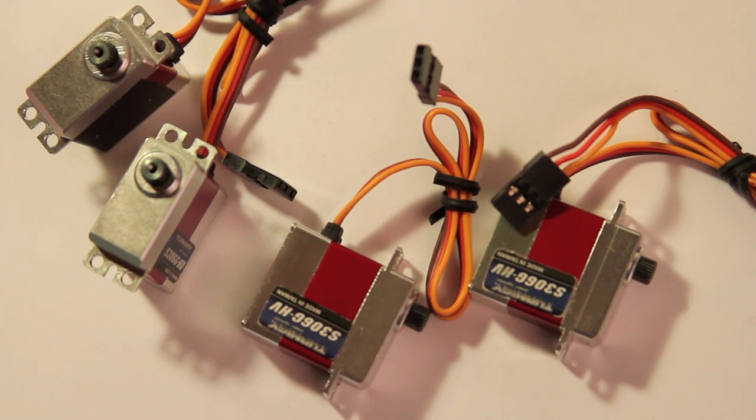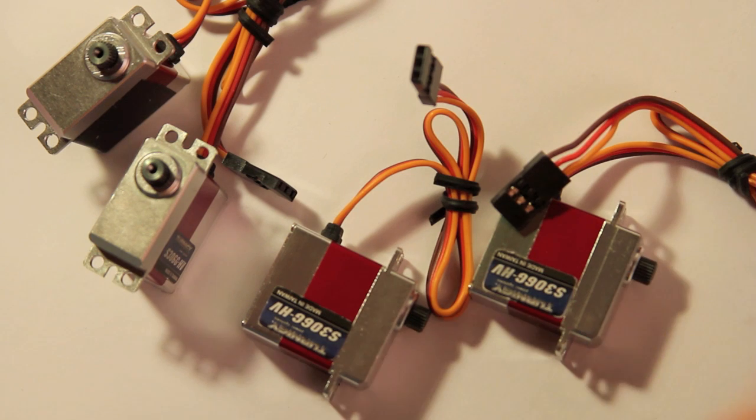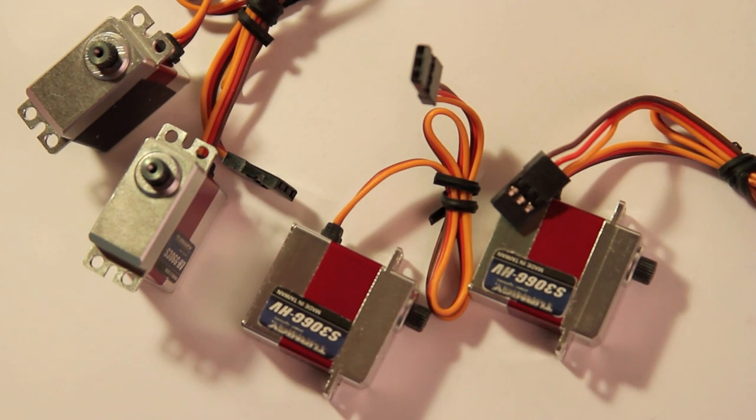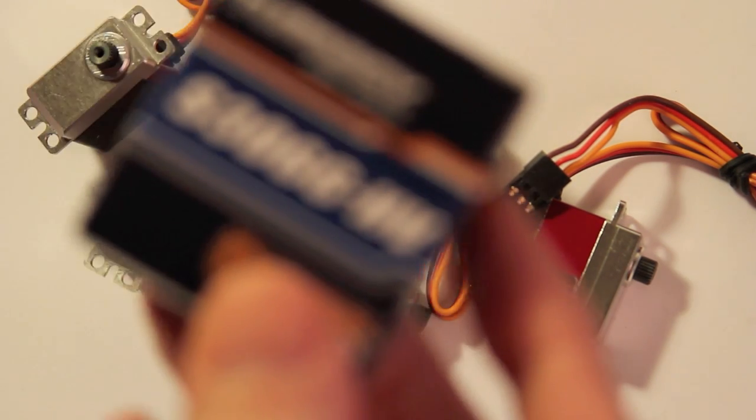But for now I want to take a quick moment to talk to you about the servos that I got for the Cyclic. So these are the Turnigy's S306G. Here's the box for it. This is the high voltage version.